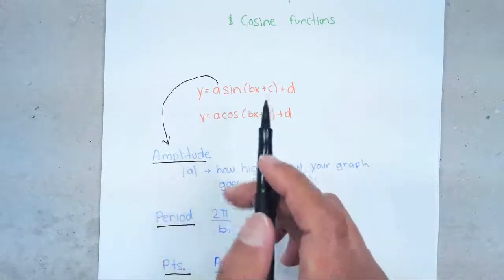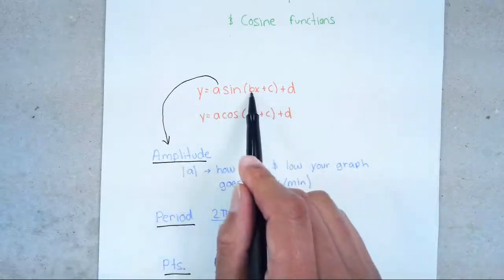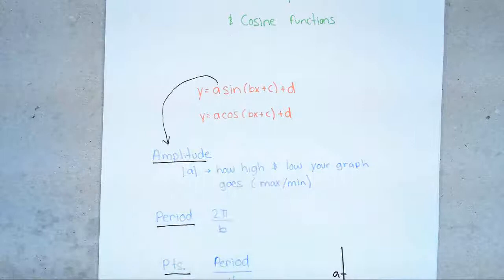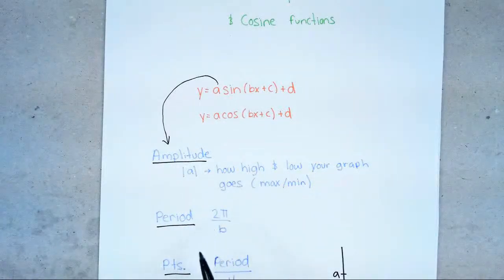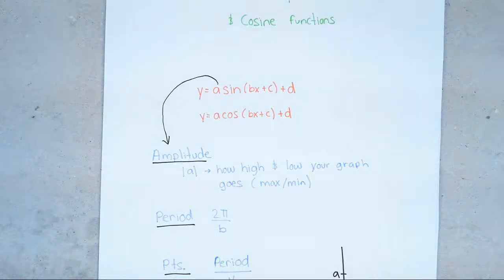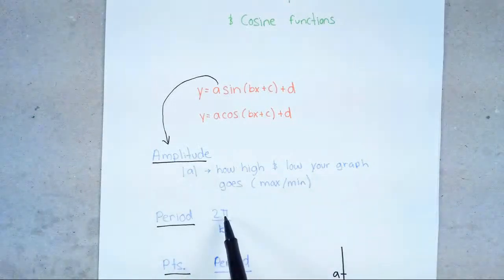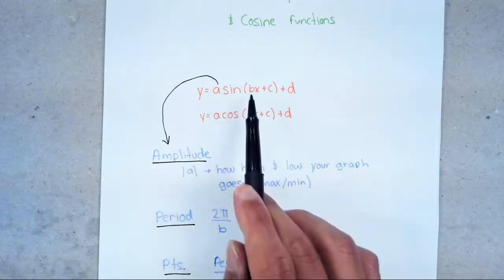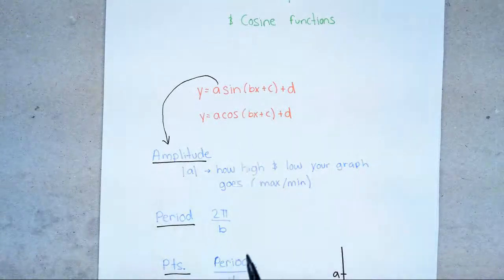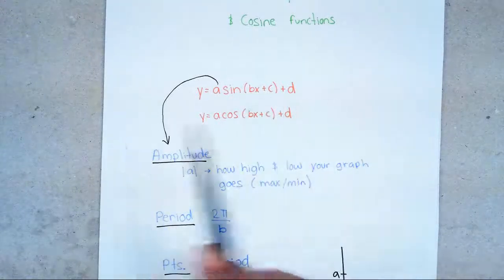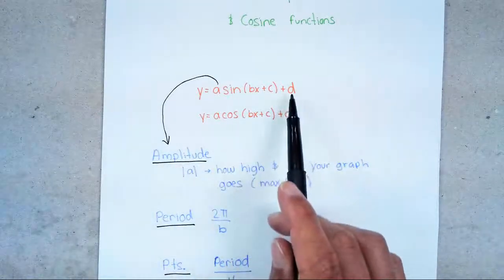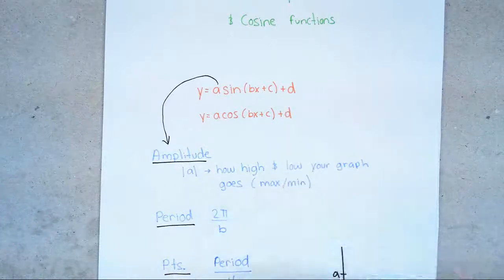The next part is B. This B is super important — it tells you your period. You need to memorize that in sine and cosine, the period is always going to be 2π. So to figure out what's going to happen, you take 2π and put it over B whenever there's a number in front of x. The C tells you how far you go left and right, and the D tells you how much you go up and down.